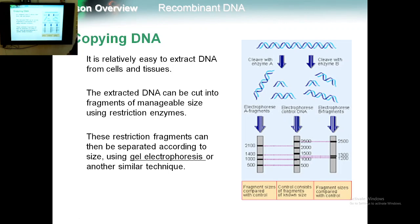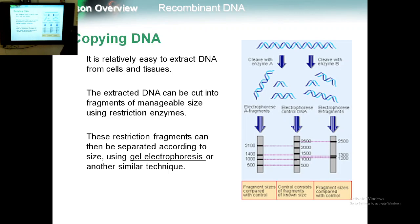Let's look at DNA copying. It's easy to extract DNA from tissues or cells. For example, we can take blood or any tissue to extract the DNA from it. Then, this extracted DNA can be cut using restriction enzymes — enzyme A, enzyme B — to cleave the DNA into smaller fragments. These fragments are then separated by a technique known as gel electrophoresis, which separates DNA fragments according to size.